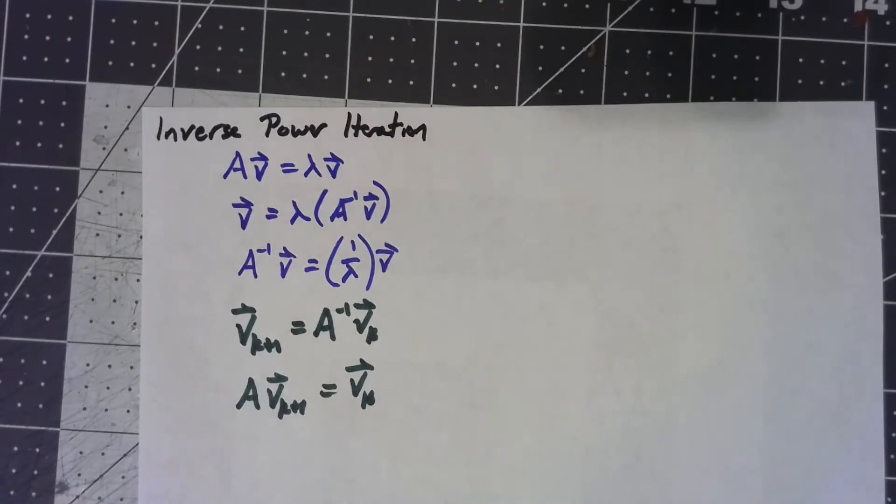But even using this trick, we can get the largest eigenvalue for A, we can get the smallest eigenvalue for A, but if we had, for example, a 200 by 200 matrix, that leaves 198 eigenvalues to go.